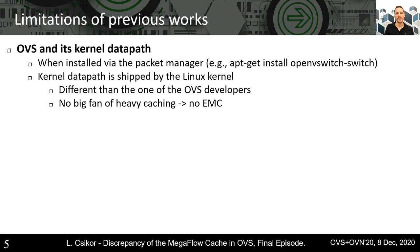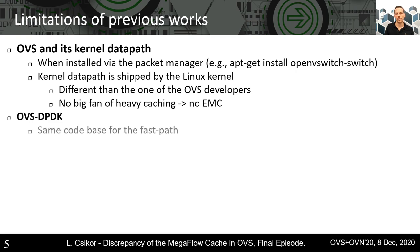Every time we get rid of some limitations or variables we have fixed before. During the discussions of my previous talks, it turned out that OVS when installed via the underlying system's packet manager, its kernel data path — the fast path — is shipped by the underlying kernel. This means the kernel module itself is maintained by the kernel developers and is not necessarily in line with the mainstream OVS data path. For instance, the kernel networking developers are not in favor of heavy caching, so it does not have the EMC, only the MFC. Furthermore, last time it also turned out that the DPDK-based OVS might also be vulnerable, since both the pure and the DPDK version essentially share the same code base.